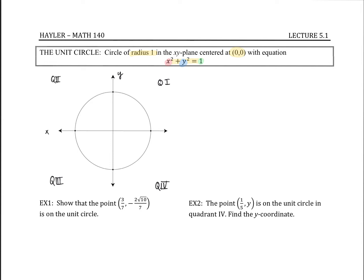Always feel free to pause the video and take a little bit of time to soak things in as I tell them, and replay the video if you need to. We have these quadrants, and we know that the radius is always going to be 1. So this point here — talking about my radius of my circle, from this point to this point — that distance is 1. That means that the point here, xy, is going to be (1, 0).